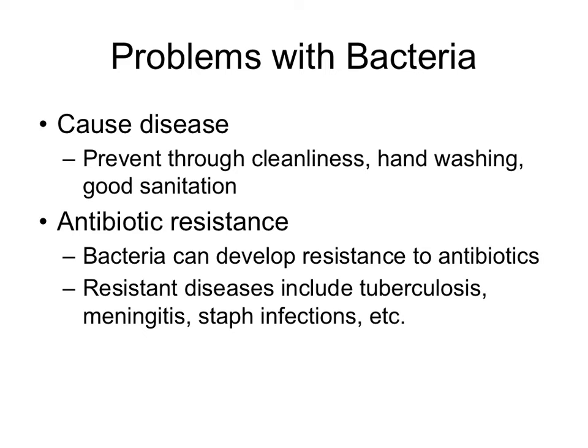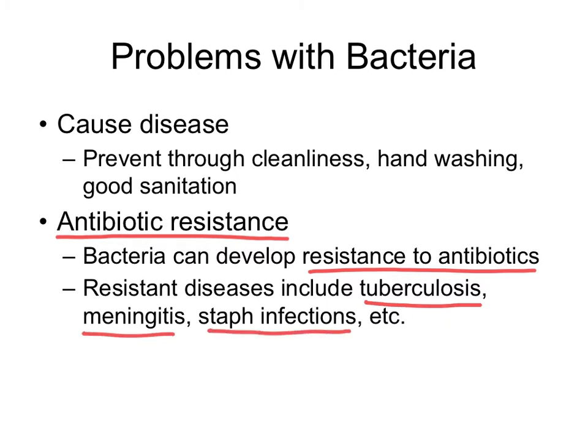We can treat many bacterial infections with antibiotics, but not always. Antibiotic resistance is becoming a serious problem because bacteria can develop the ability to resist antibiotics, meaning the antibiotic can no longer kill that kind of bacteria. If bacteria become resistant, the infection can become untreatable. Diseases that have become resistant to antibiotics include tuberculosis, meningitis, and staph infections.